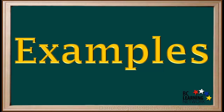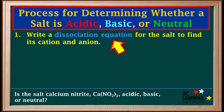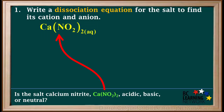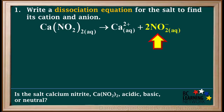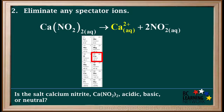Now we'll go through a few examples. We're asked to determine whether the salt calcium nitrite, with the formula Ca(NO2)2, is acidic, basic, or neutral when dissolved in water. The first step is to write the dissociation equation for the salt. Ca(NO2)2 dissociates into a calcium ion, Ca2+, and two nitrite ions, NO2-. The second step is to eliminate any spectator ions. Because it's a member of group 2, the calcium ion is a spectator ion and can be eliminated.